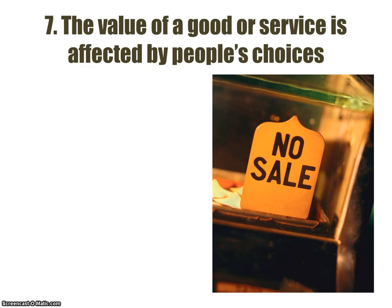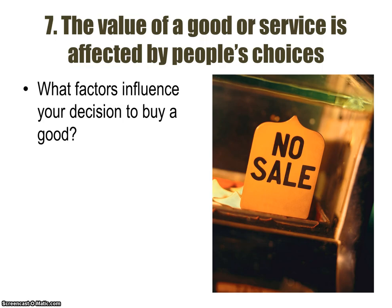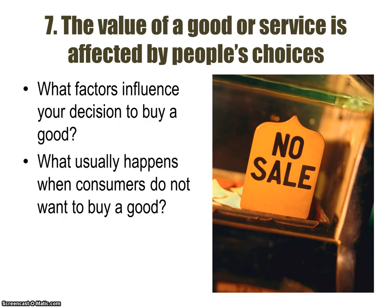Number seven: the value of a good or service is affected by people's choices. This has to do with prices and the supply and demand model in a market economy — we'll get into that in Unit 2. What factors influence your decision to buy a good? What usually happens when consumers do not want to buy a good? The answer is obvious: the price will drop.